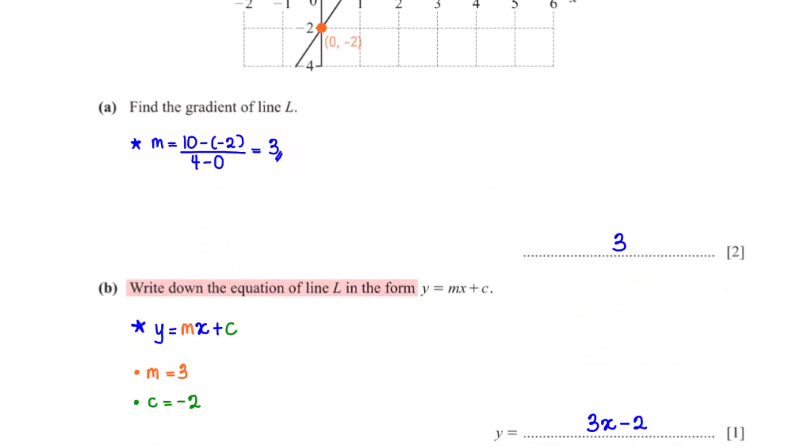Write down the equation of line L in the form y equals mx plus c. All we need to do is find the values of m and c and plug in these values into y equals mx plus c. We've already found the gradient m of the line to be 3. To get c, we pick the y-coordinate of the point on the y-axis through which the line passes, which is negative 2. So we have y equals 3x minus 2.